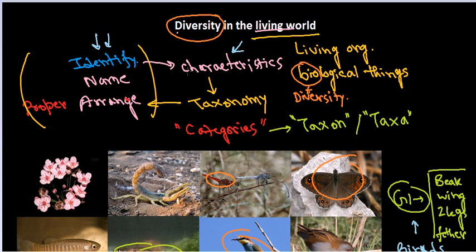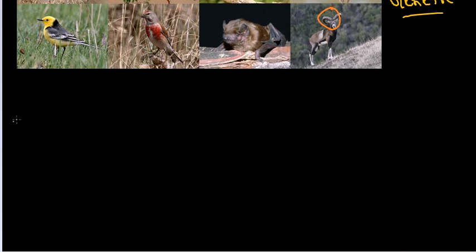Once we know the characteristics and put organisms into different taxa to find taxonomical groups, the next thing is to give them a suitable name so we can find them in the future. This naming process is termed nomenclature — simply, nomenclature means naming an organism.